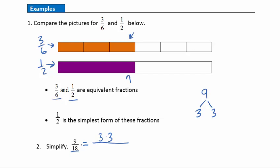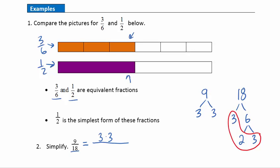Now I'll do the same thing with 18. I'm thinking 3 times 6 gives me 18. 3 is prime, but I'm going to factor 6 again because 6 is a composite number, meaning I can still factor it. So 6 factors into 2 times 3. Taking the ends of those tree branches gives me the prime factorization of 18: 3 times 2 times 3. Now I'm going to look for common factors in the numerator and denominator and divide those common factors out.